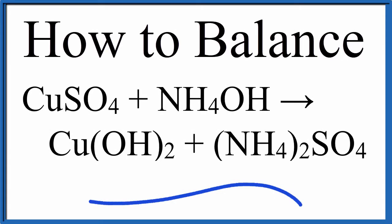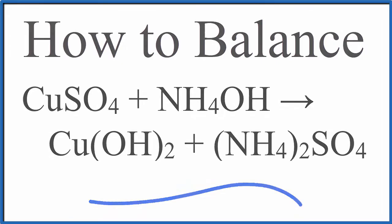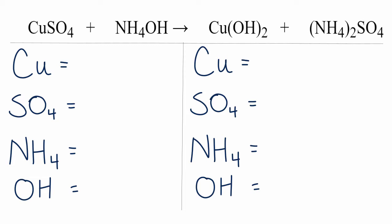In this video, we'll balance the equation copper 2 sulfate plus ammonium hydroxide yields copper 2 hydroxide plus ammonium sulfate. It's a double displacement reaction, and it looks pretty complicated at first. It's actually a very easy equation to balance.